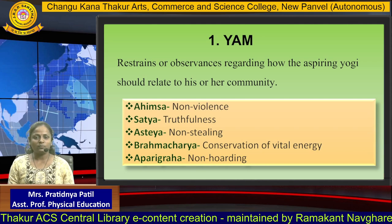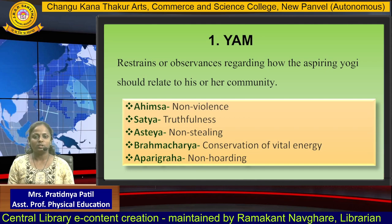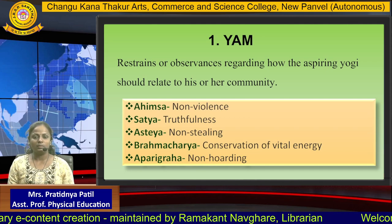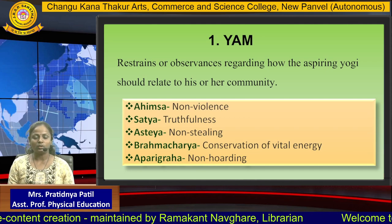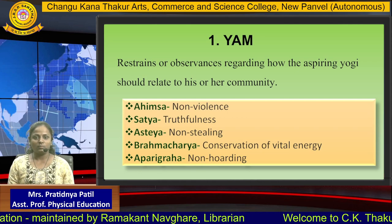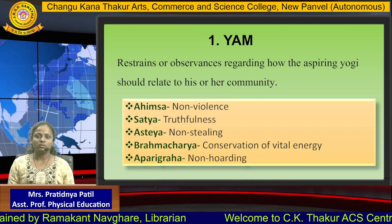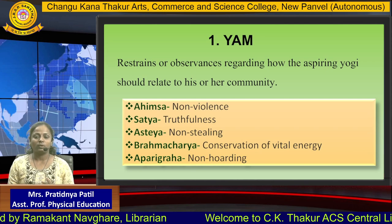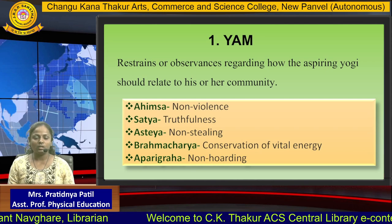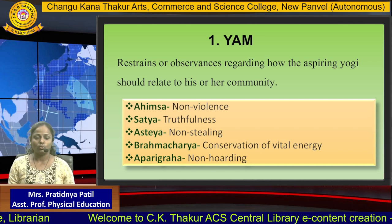The third YAM is Asteyam, which means non-stealing — you cannot steal any material thing or any ideas from anyone. The fourth YAM is Brahmacharya, which means conservation of vital energy. And the fifth YAM is Aparigraha, which means non-holdings.